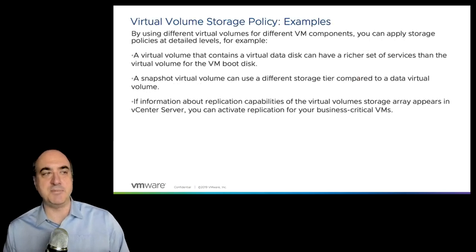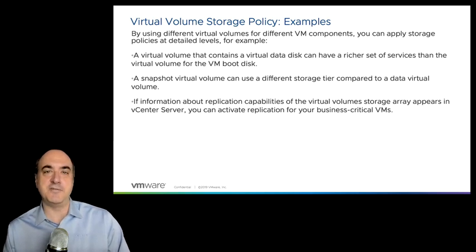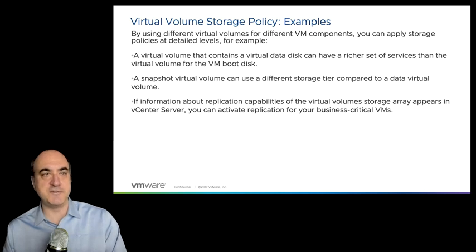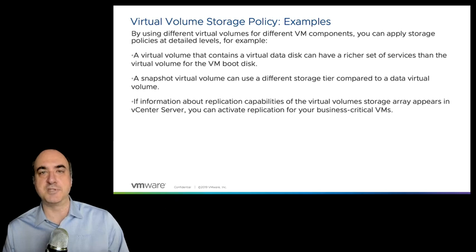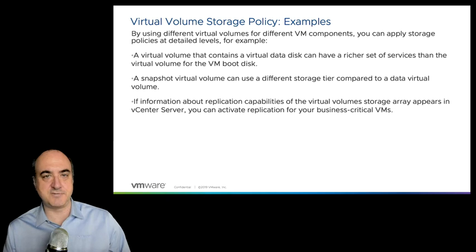You have to make sure you have an idea of the different requirements. You can learn what all the different capabilities are from your virtual volumes storage provider. By using different virtual volumes in different VM components, you can have a whole variety of different granularities. A virtual volume that contains virtual disk data can have a rich set of capabilities, or a snapshot virtual volume can use a different storage tier compared to its virtual disk level. This is a little bit different than vSAN — in vSAN, the delta disk inherits what the virtual disk has. Here, we can get even more granularity; each object can have its own policy if you need to.